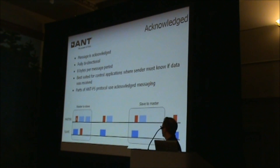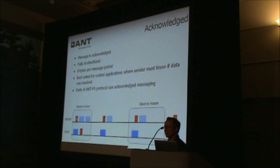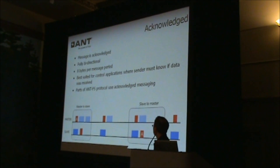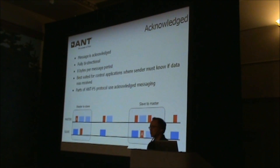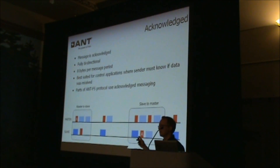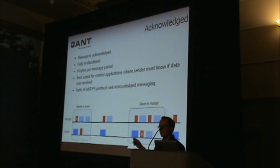Going in the other direction, it's similar. If the slave has an acknowledged message that it wants to send to the master, the host MCU will need to indicate that and send that message flagged as acknowledged to ANT. ANT is going to buffer that message and wait to receive a message from the master, at which time it will send a flagged acknowledged message back to the master. The master receives that message in its Rx window, sees that it's an acknowledged message, so it generates an acknowledged packet back to the slave. The slave is anticipating this because it knows it sent an acknowledged packet. Then the master will open up another Rx window to account for coexistence. It takes a lot more power to send a message from the slave to the master than from the master to the slave — something to consider as you're designing your networks.